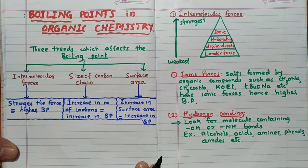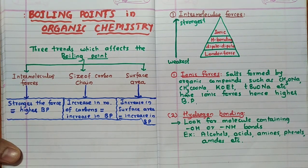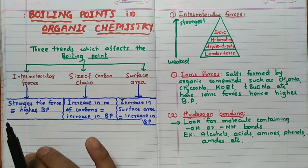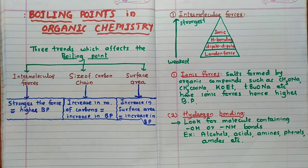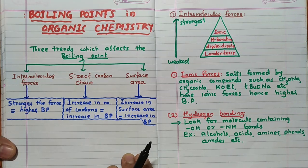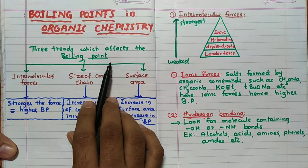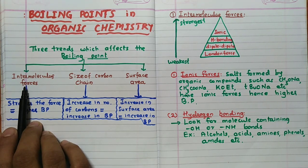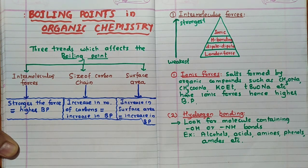Boiling point is nothing but the temperature at which atmospheric pressure equals the vapor pressure of a substance. There are three trends which affect the boiling point: first, intermolecular forces between the atoms; second, size of the carbon chain; and third, surface area.